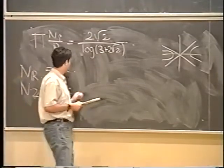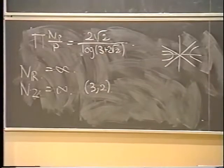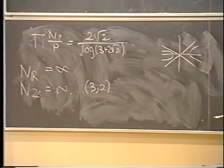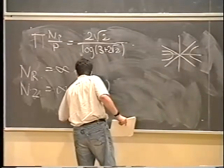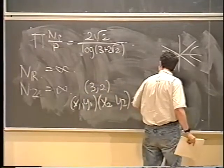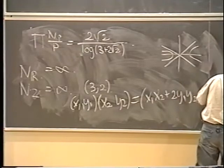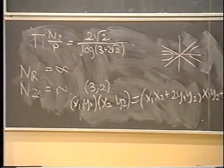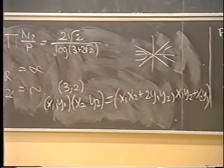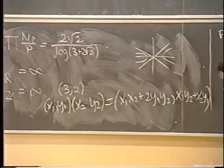One way to see that N_z is infinite: there is a fundamental solution (3, 2), since 3² − 2·2² = 1. In addition, the solutions of this equation are endowed with a natural group law — you can multiply (x₁, y₁) with (x₂, y₂) to get (x₁x₂ + 2y₁y₂, x₁y₂ + x₂y₁). Starting with the fundamental solution, you can generate infinitely many. In fact, all solutions are obtained by taking powers of this fundamental one.